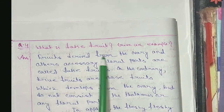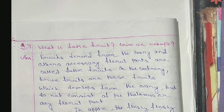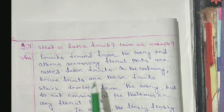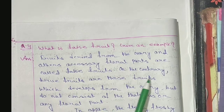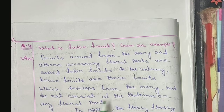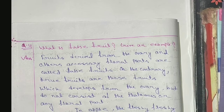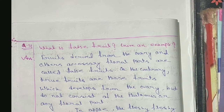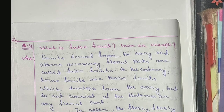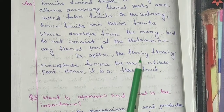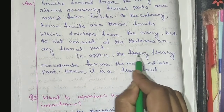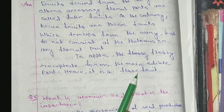What is a false fruit? Give an example. Fruits derived from the ovary and other accessory floral parts are called false fruits. True fruits are those which develop only from the ovary and do not consist of the thalamus or any other floral part. Fruits derived from the ovary along with other accessory floral parts are known as false fruits. Apple is an example of a false fruit — in apple, the fleshy receptacle forms the main edible part, hence it is a false fruit.